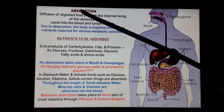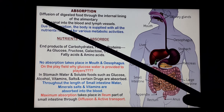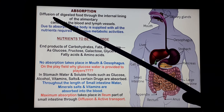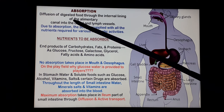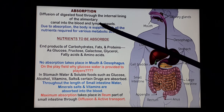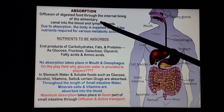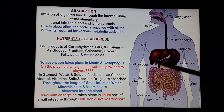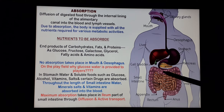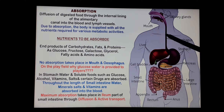Now, during absorption, the simple diffusible form of digested food is absorbed into the blood vessels and the lymph vessels through the inner lining of the alimentary canal, so that the various nutrients can be provided to the body for the different metabolic activities.